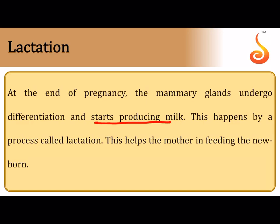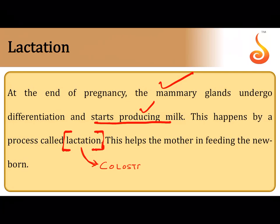At the end of pregnancy, the mammary glands undergo differentiation and start producing milk — a process called lactation. This differentiation occurs under the influence of progesterone and certain hormones produced by the placenta, such as human somatomammotropin (or human placental lactogen), which are responsible for differentiation of the alveoli in the mammary glands. The initial milk produced in the first two to three days is called colostrum, which is rich in antibodies that help reinforce the baby's immune system.